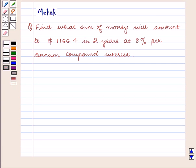Hello and welcome to the session. In this session we are going to discuss the following question. Find what sum of money will amount to $1166.4 in 2 years at 8% per annum compound interest.